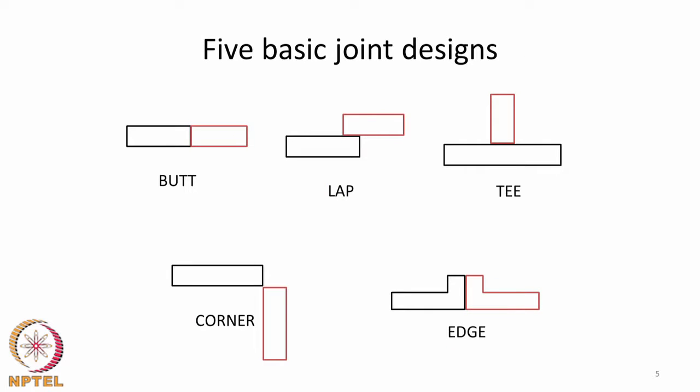These welding geometries can be understood by looking at the type of joints. A butt joint is when two mating parts are juxtaposed beside each other and then joined. A lap joint is where the two mating parts are kept on top of each other and then joined. A T-joint is where the mating parts are configured to look like a T. A corner joint is where they are kept at an angle to each other and joined at the edge. An edge joint is where two mating parts are initially in the butt geometry but folded up so they can be joined along the edge rather than along the plane.